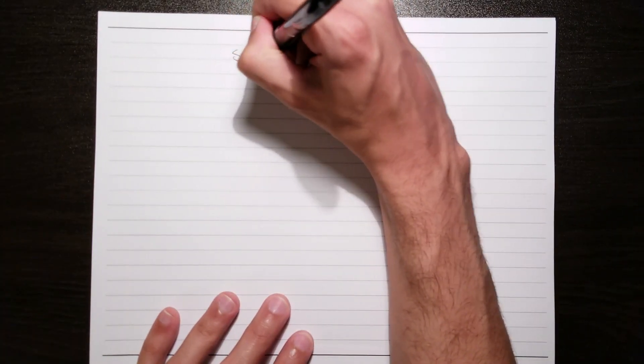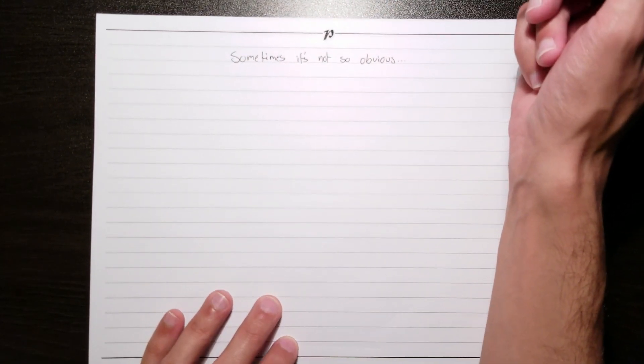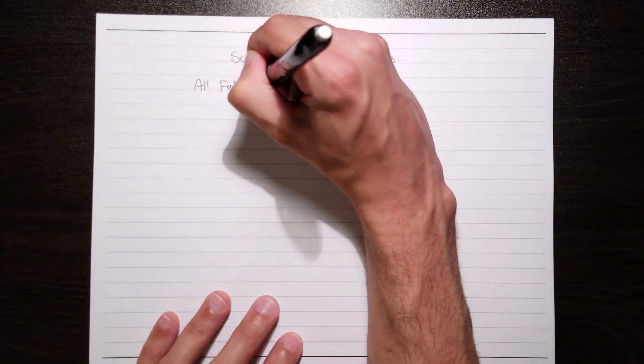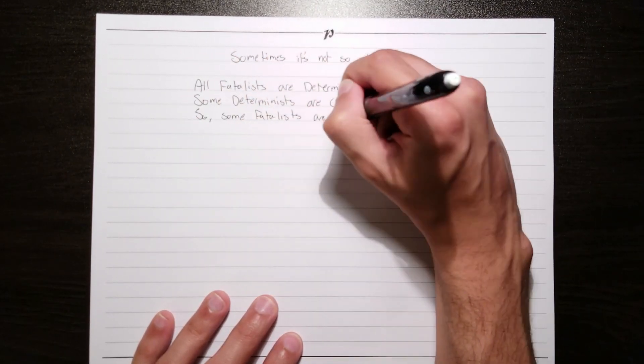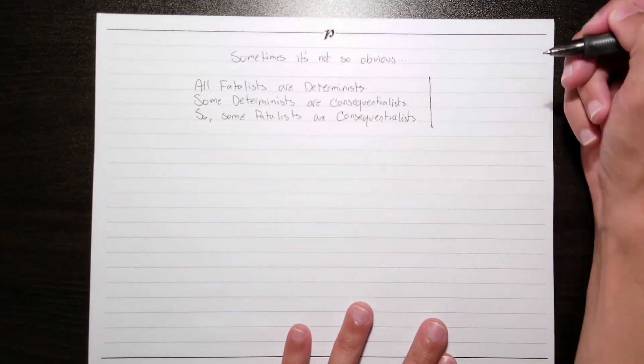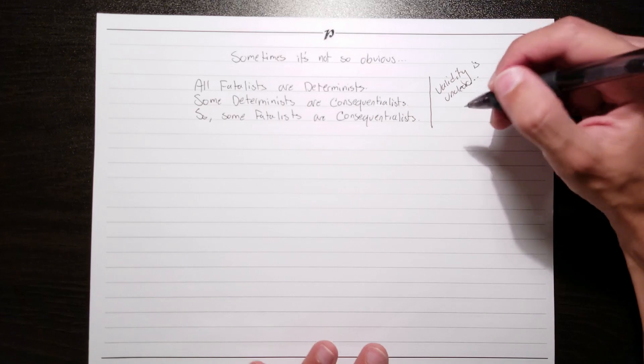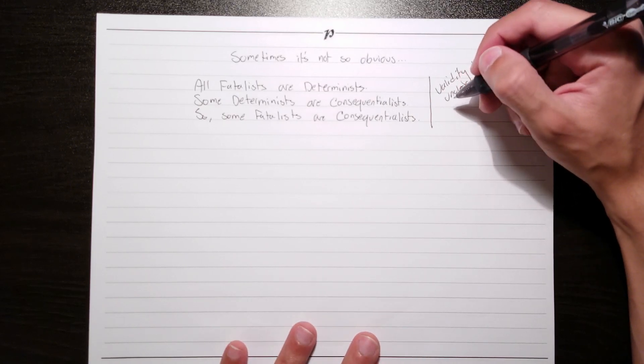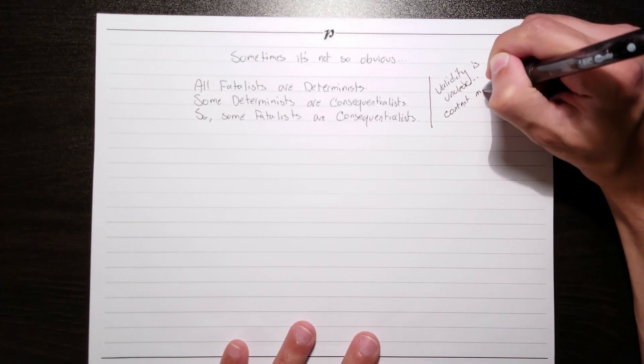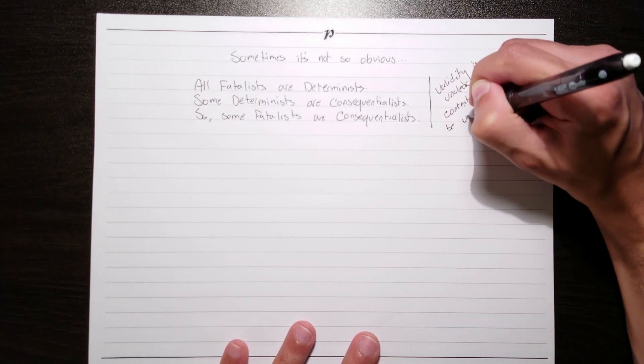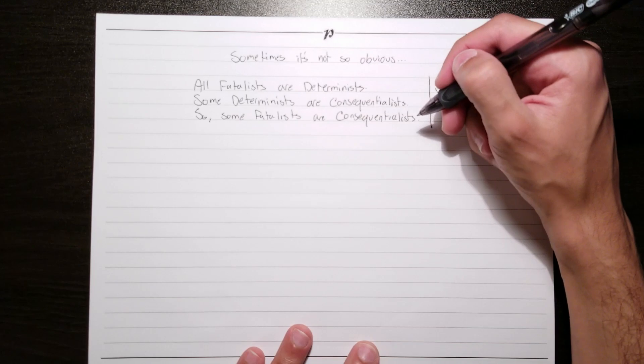Of course, sometimes it's not so obvious whether an argument is valid. For instance, consider this slightly convoluted argument. All fatalists are determinists. Some determinists are consequentialists. So, some fatalists are consequentialists. Whether an argument such as this one is valid is a little unclear. This isn't to say that you might not have an intuition as to whether it's valid or invalid, but just that it's not as easy to tell. Also not everyone knows what these terms mean, which means that the content might be unfamiliar. It's arguments such as these that give us a need to have some method of testing for validity, other than just our intuitions.